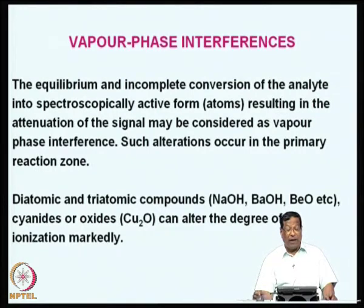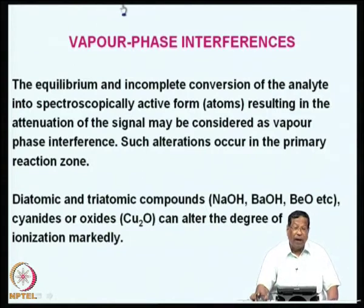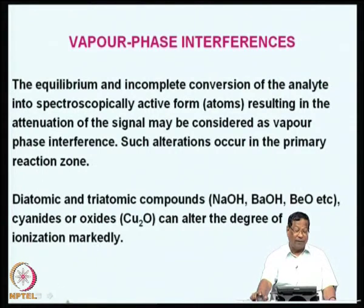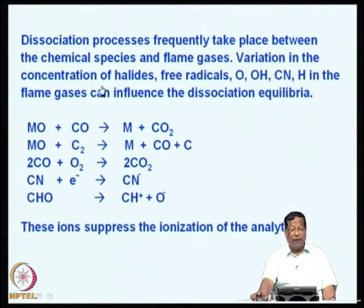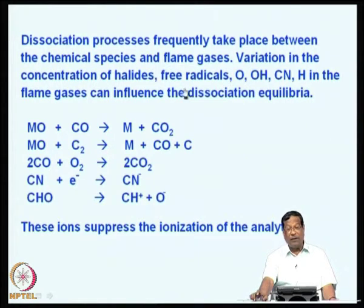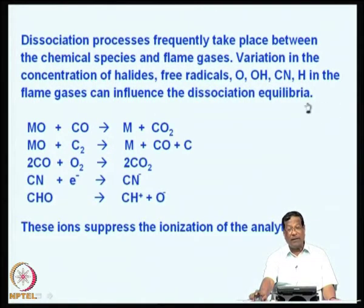Diatomic and triatomic compounds such as sodium hydroxide, barium oxide, cyanides, and oxides are readily formed in the flame and can alter the degree of ionization markedly. This is another type of vapor phase interference; dissociation processes take place between the chemical species and the flame gases.